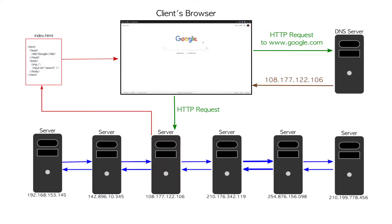Now, if you actually type something into a search bar and hit go, it's going to do another HTTP request to the server. This time it does what's called a POST request, and that POST request will contain the information you typed into that search bar. The server will interpret what you typed, find search results, create HTML, and send that back to your browser. Your browser will then re-render and show the search results underneath the search bar. That's kind of how it works.